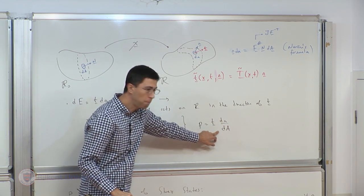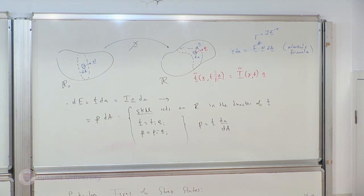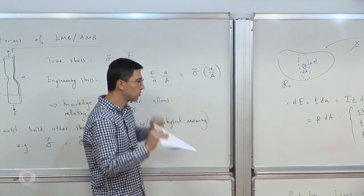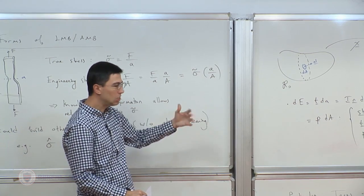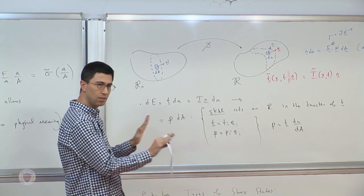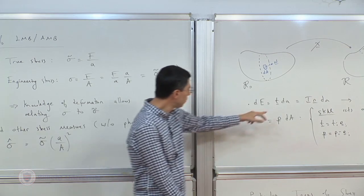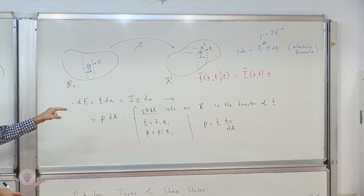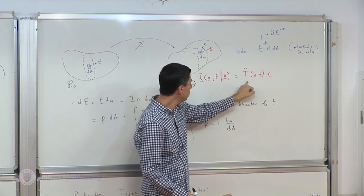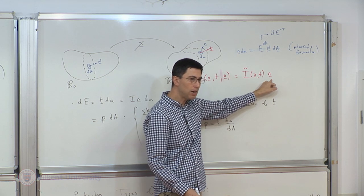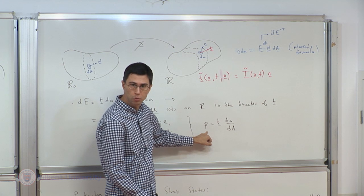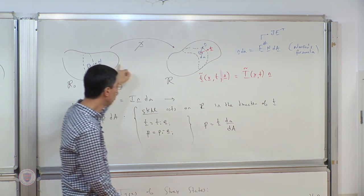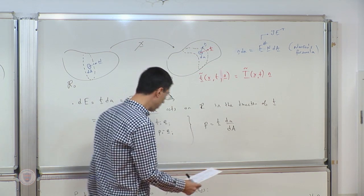So T here is the Cauchy (true) traction and P is like an engineering traction — related to T through the area ratio. The question is: is there a stress tensor from which we can recover this new traction vector P by operating on the referential outward unit normal N (rather than the spatial normal n)? That is the question we want to answer.